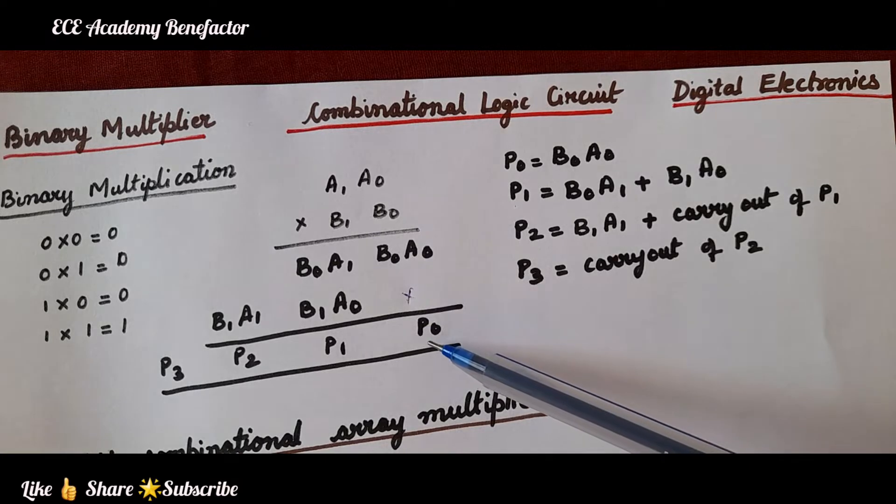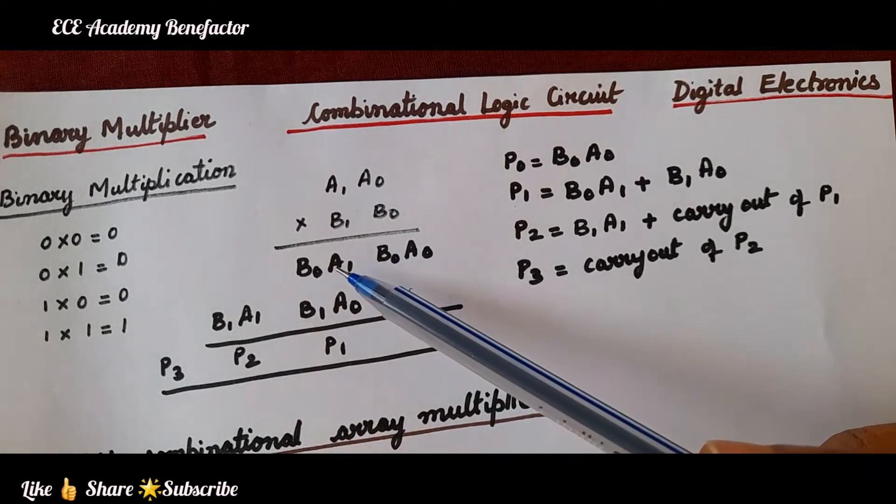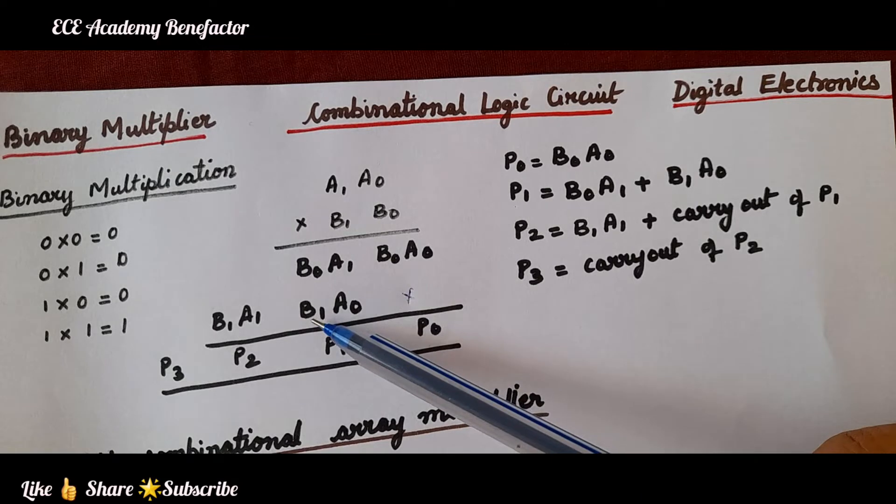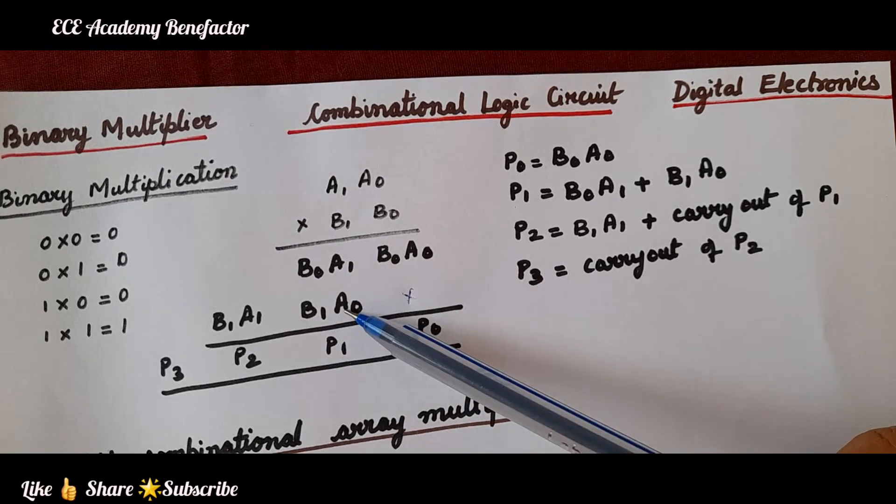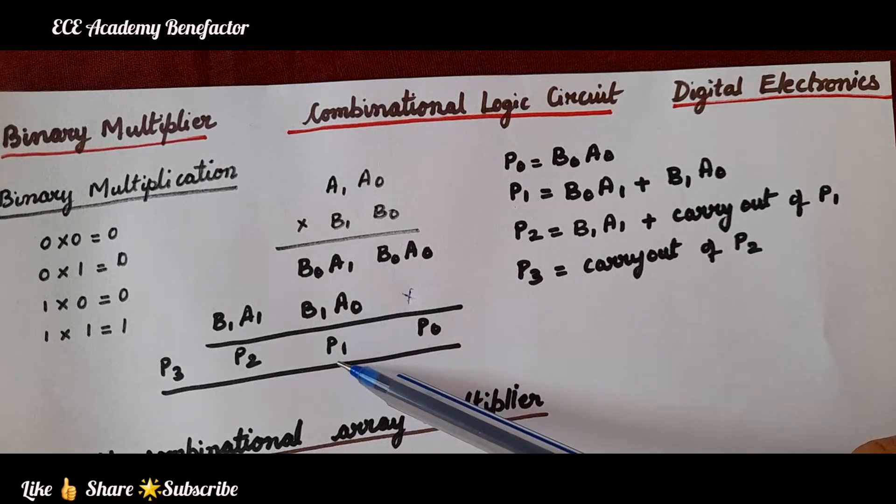And then we add b0a0 to get p0, and then we add b0a1, b1a0. We are adding these 2 binary numbers to get the product p1.